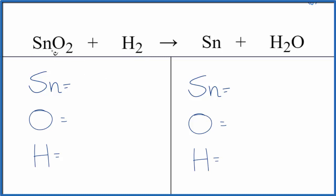To balance the equation, we have one tin, two oxygens, and two hydrogens. Product side, one tin, one oxygen, and two hydrogens.